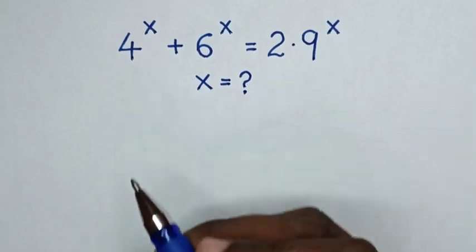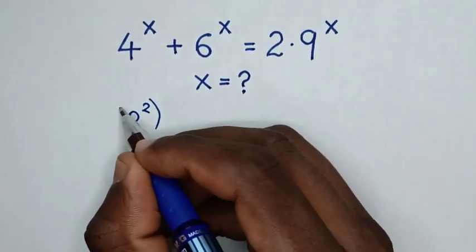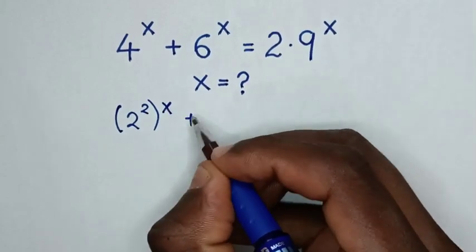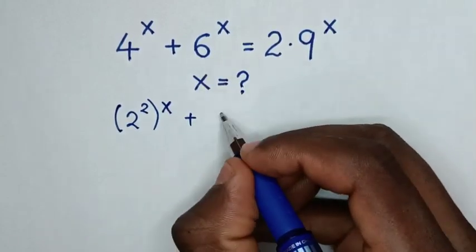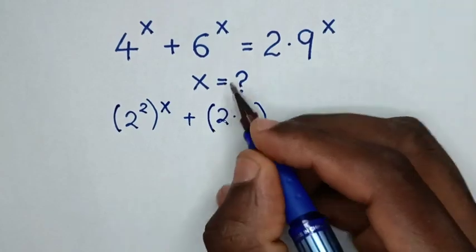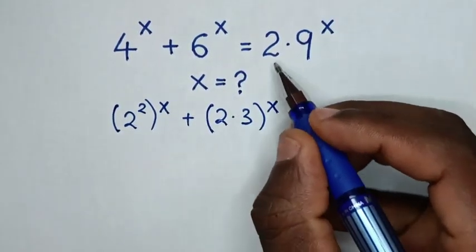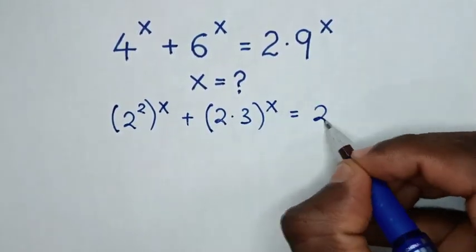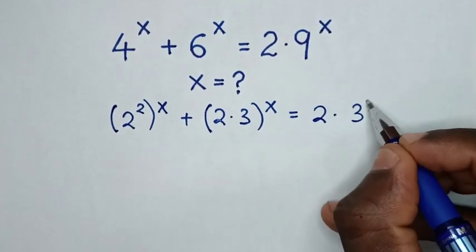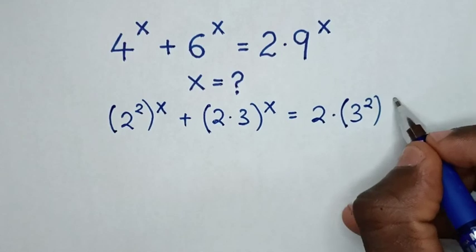4 is the same as 2 power 2, bracket power x, then plus 6 is the same as 2 times 3, bracket power x, is equal to 2 times 9, which is the same as 3 power 2, bracket power x.